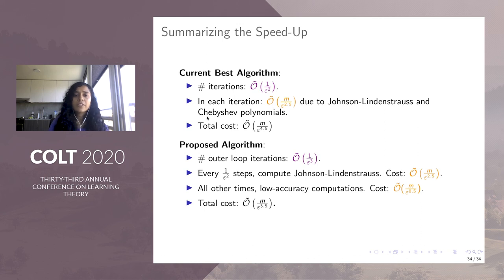So here we're just summarizing the two results. The current best algorithm has epsilon to the minus two iterations from the mirror descent with M over epsilon to the 2.5 cost per iteration, which gives us their total cost. And in our algorithm, because we slow down the algorithm by having more outer loop iterations, but then every one of our epsilon square steps, you compute these high accuracy things. And then all other times you do the low accuracy steps. And so our overall cost is M over epsilon to the 3.5. That's all I have to say. Thank you for your attention.